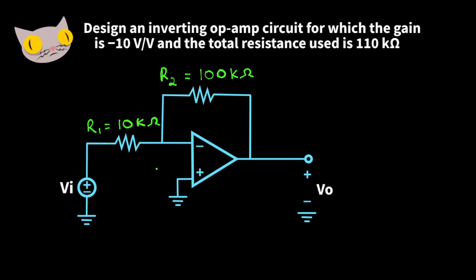Here's the inverting op amp circuit that we just designed, with R1 being 10k ohms and R2 being 100k ohms. That would give us a gain of negative 10. Thank you for watching.